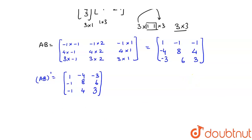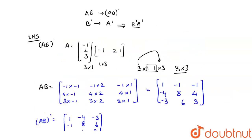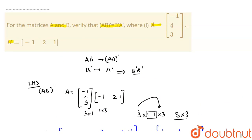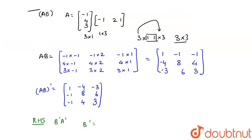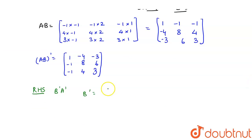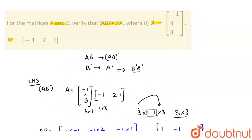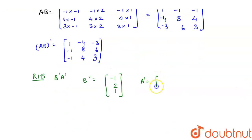Now taking the RHS, which is BᵀAᵀ. Bᵀ: B is written as [-1, 2, 1], so Bᵀ would be a column vector [-1, 2, 1]. And Aᵀ: A is written as [-1, 4, 3], so Aᵀ would be the row vector [-1, 4, 3].